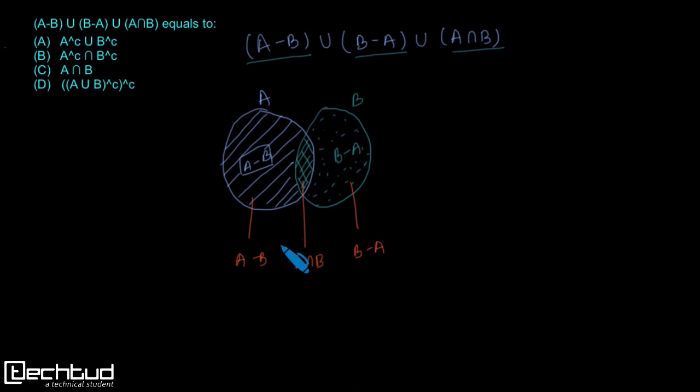And what is the union of all these three? Union of all these three is the whole space A and B, right? That is A union B, right?